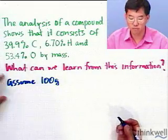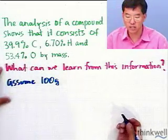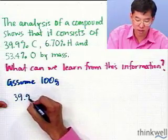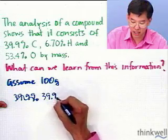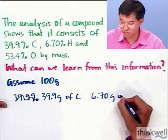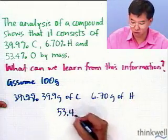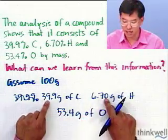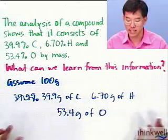Why is that useful? If we assume our sample consists of 100 grams, then since these are all percentages by mass, that 100 grams consists of 39.9 grams of carbon, 6.70 grams of hydrogen, and 53.4 grams of oxygen. These add up to pretty close to 100 grams, so all of our mass is accounted for.